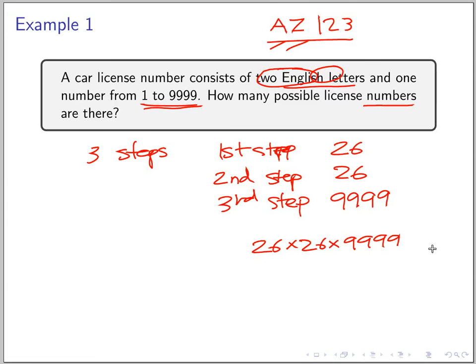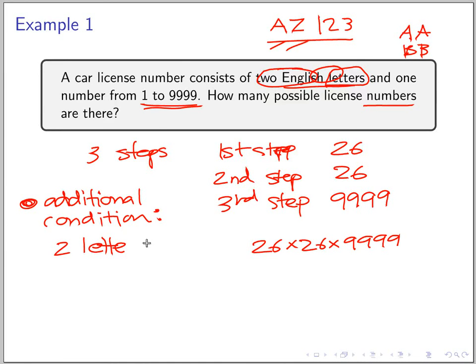Now, if we add some condition that the two English letters have to be different—so you cannot have AA or you cannot have BB—if we add the additional condition that two letters are different...